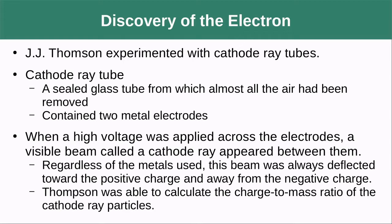Cathode ray tubes were used widely in the past for CRT televisions — those old-school televisions where a cathode ray tube focused the cathode ray onto the glass to make the image. Thomson discovered that regardless of the metals used for the electrodes, the beam was always deflected towards the positive charge and away from the negative charge. He was able to calculate the charge-to-mass ratio by figuring out how much voltage was required and carefully measuring the deflection.